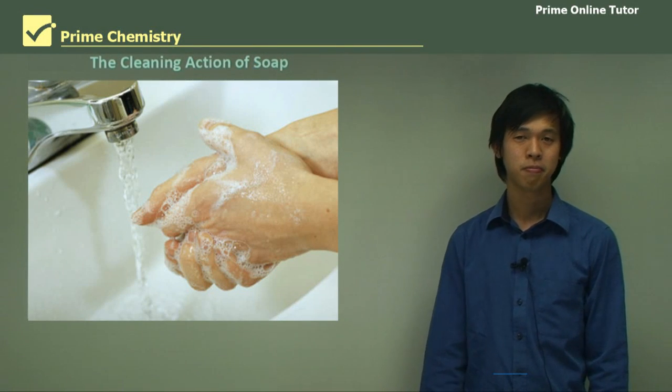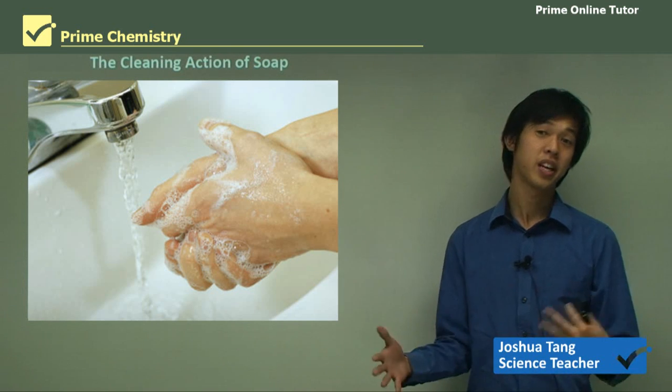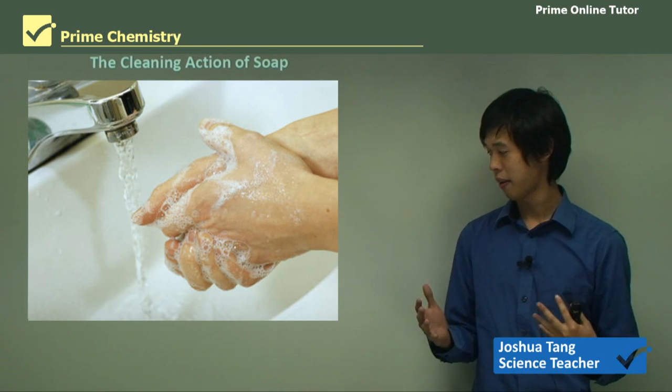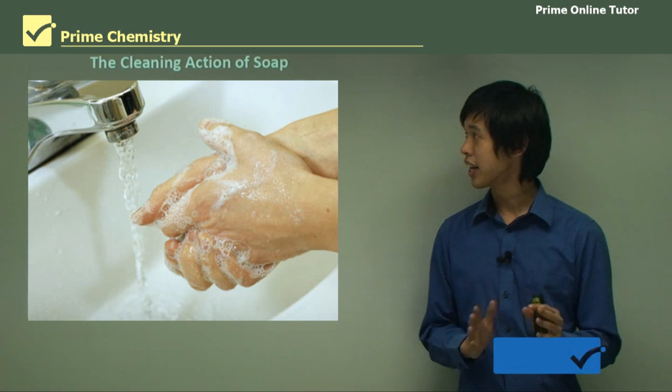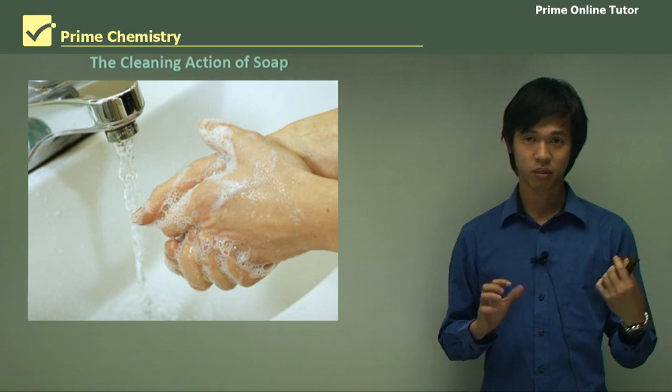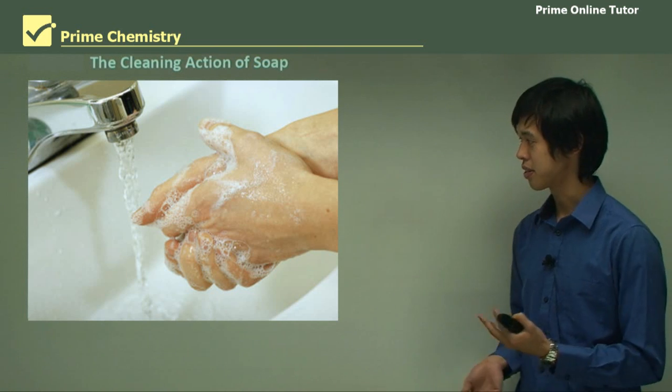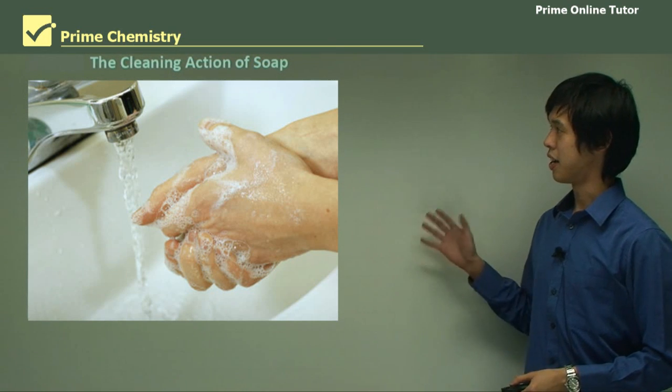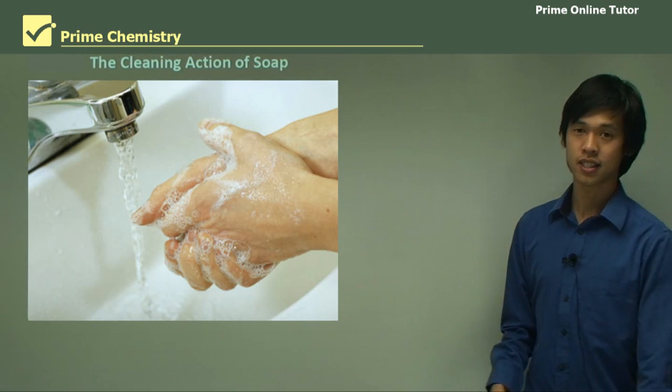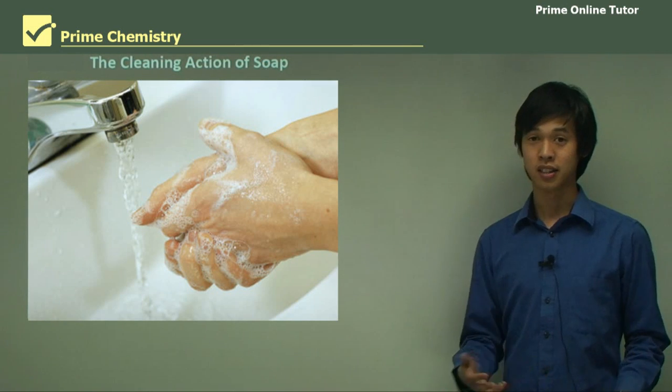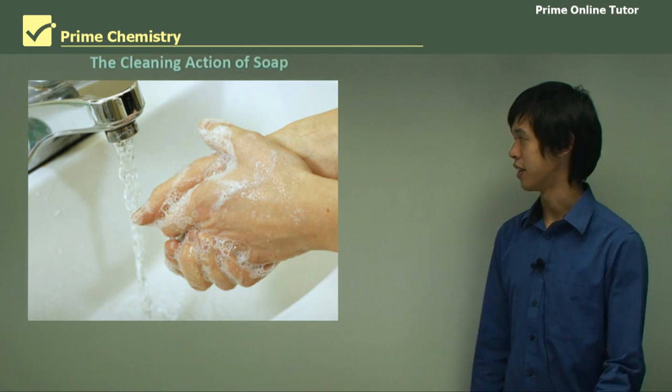Hello everyone, welcome again. In the previous two lessons, we've looked at industrial chemistry, and in particular, soap making. In this lesson, we're going to look at how does soap actually work in a chemical way. That's the focus of today's lesson. Hopefully you'll learn something about the soap that you use every day and how it cleans your hands.